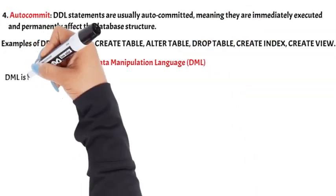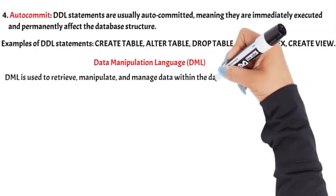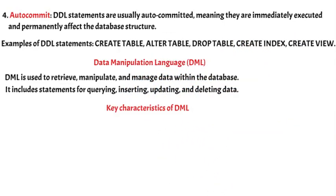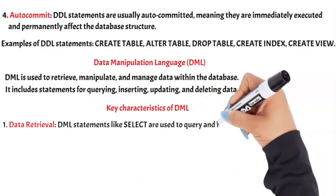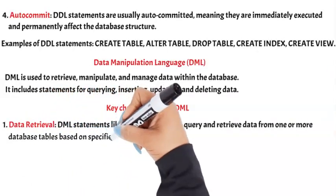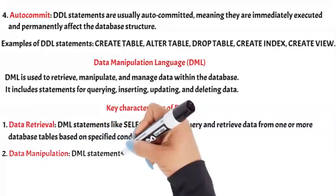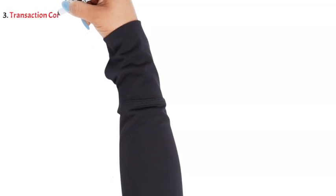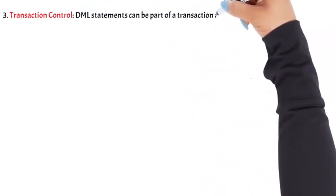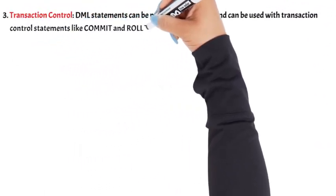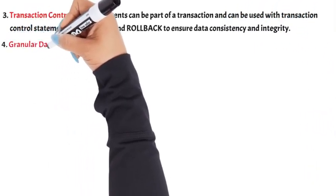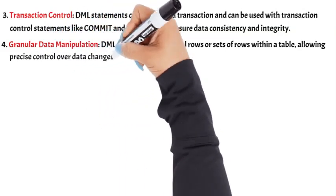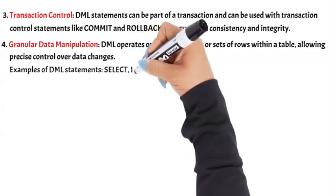Data Manipulation Language (DML) is used to retrieve, manipulate, and manage data within the database. It includes statements for querying, inserting, updating, and deleting data. Key characteristics of DML: 1. Data retrieval — DML statements like SELECT are used to query and retrieve data from one or more database tables based on specified conditions. 2. Data manipulation — DML statements like INSERT, UPDATE, and DELETE are used to add, modify, and remove data within database tables. 3. Transaction control — DML statements can be part of a transaction and can be used with transaction control statements like COMMIT and ROLLBACK to ensure data consistency and integrity. 4. Granular data manipulation — DML operates on individual rows or sets of rows within a table, allowing precise control over data changes. Examples of DML statements: SELECT, INSERT INTO, UPDATE, DELETE FROM.